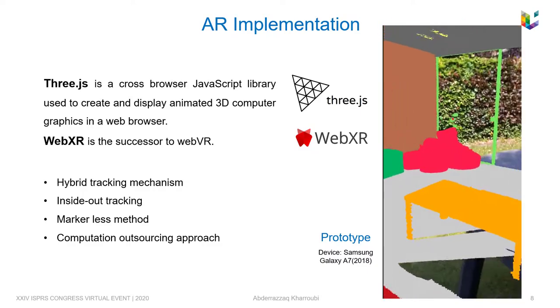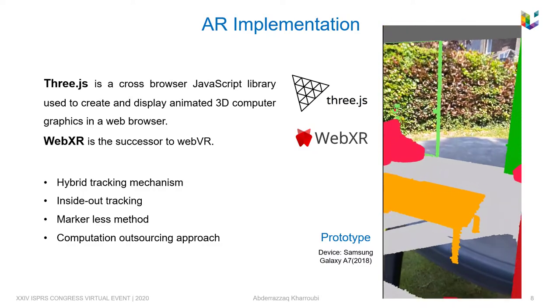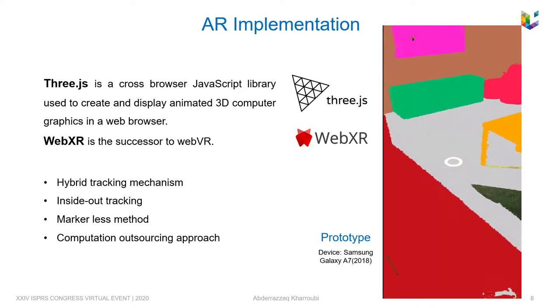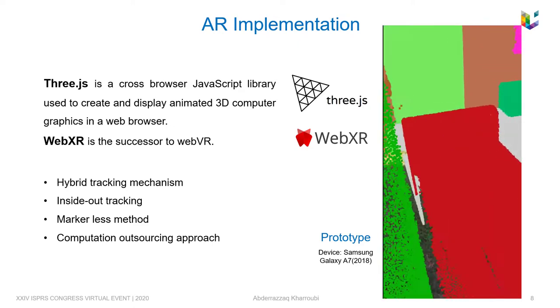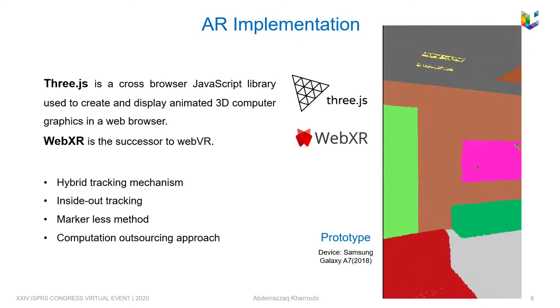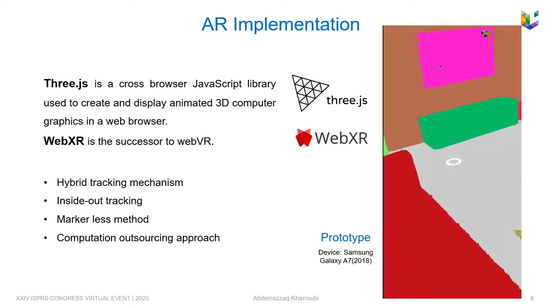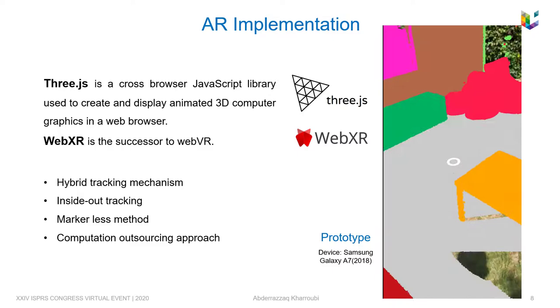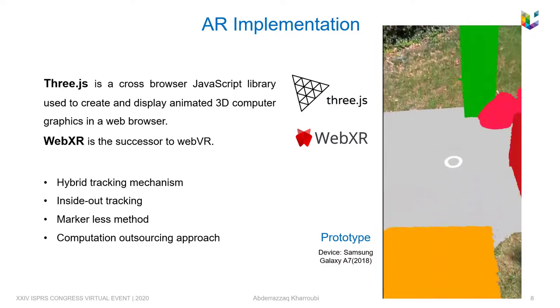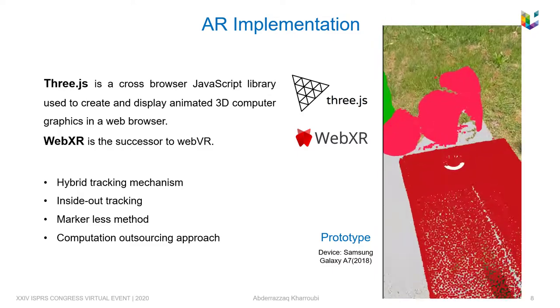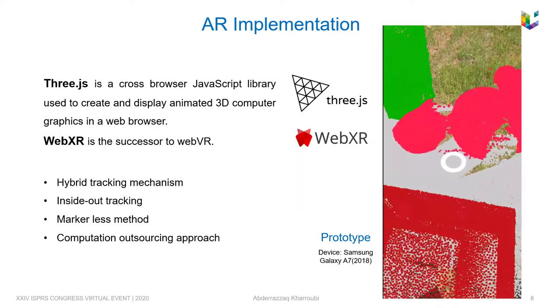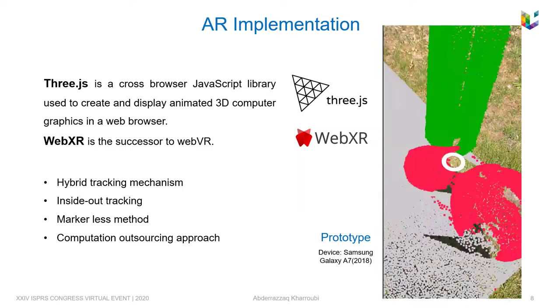After that, a search is done in the Octree to find the nodes which are in the field of view of the camera, so that these nodes are loaded progressively from the hosting server.